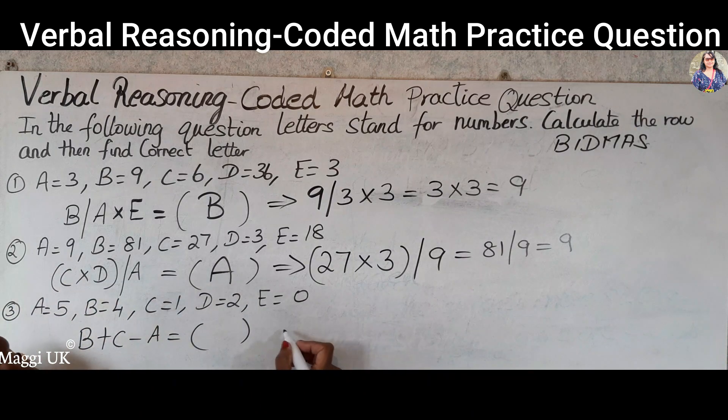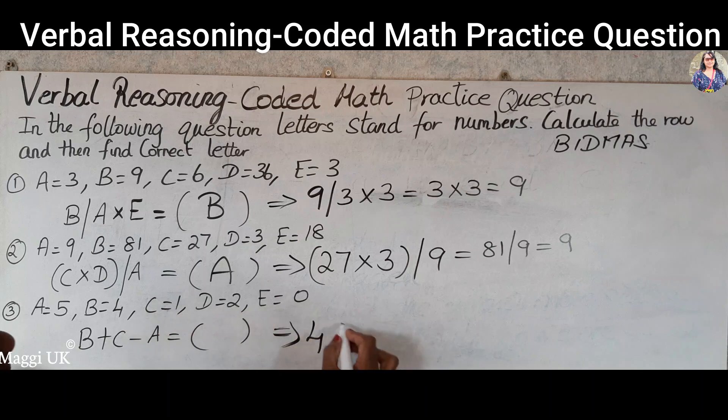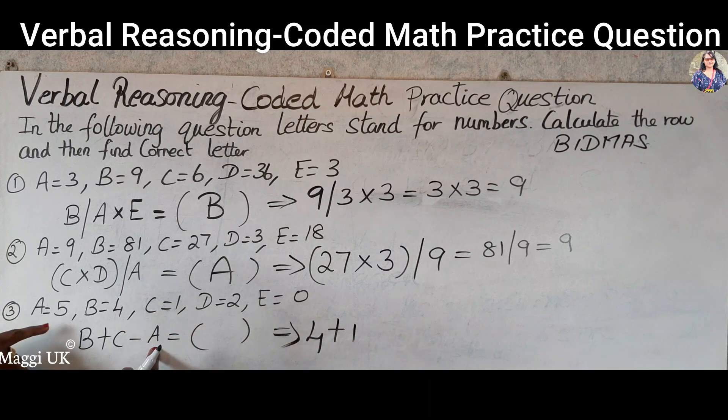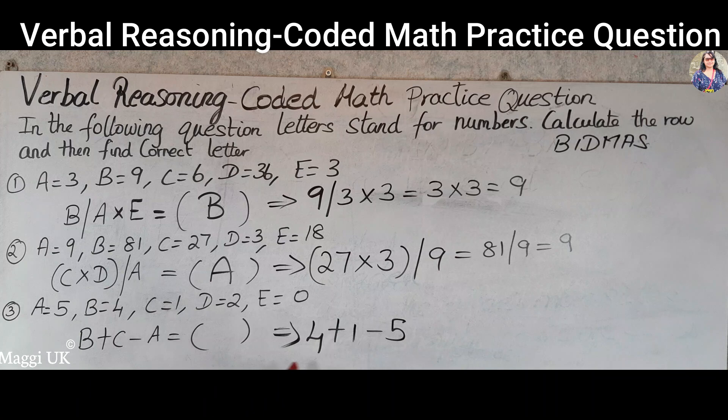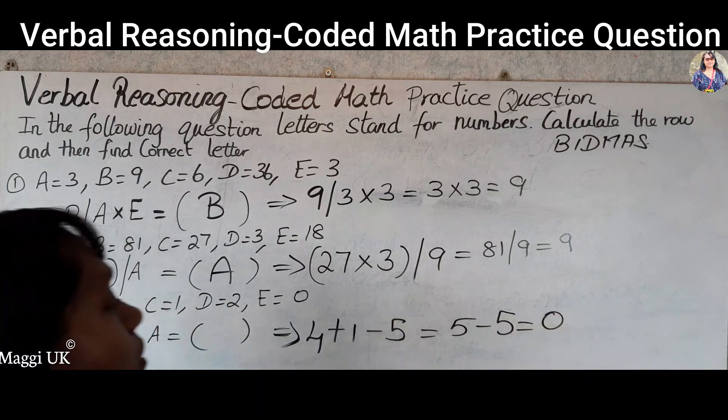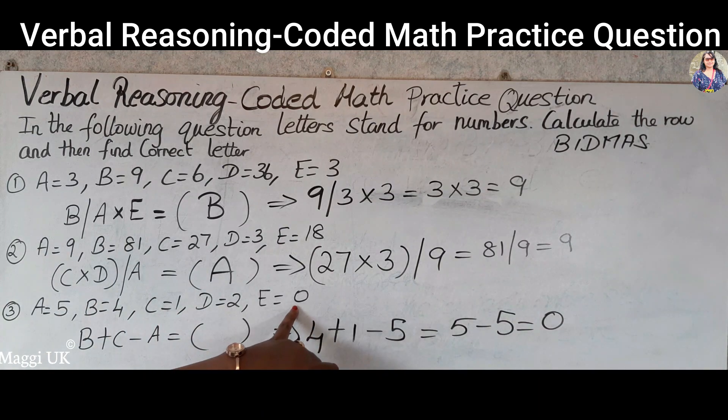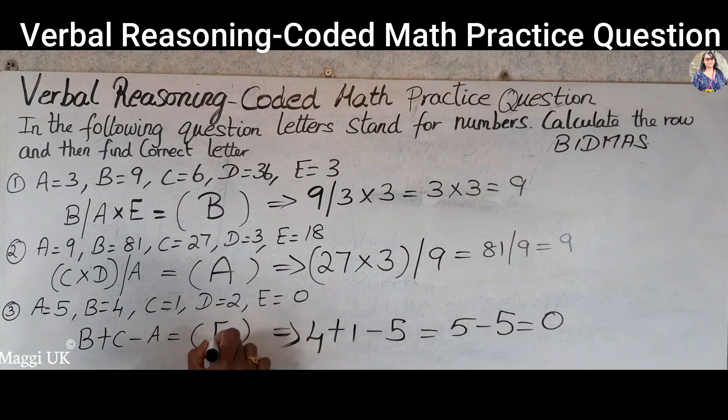So we are going to find out first what is the B value: B value is 4, and then C is 1, and then A is minus 5. So you need to add them first: 4 plus 1 is 5, which is 5 take away 5 is nothing but 0. So you need to find what letter 0 got, which is E. Your answer is E.